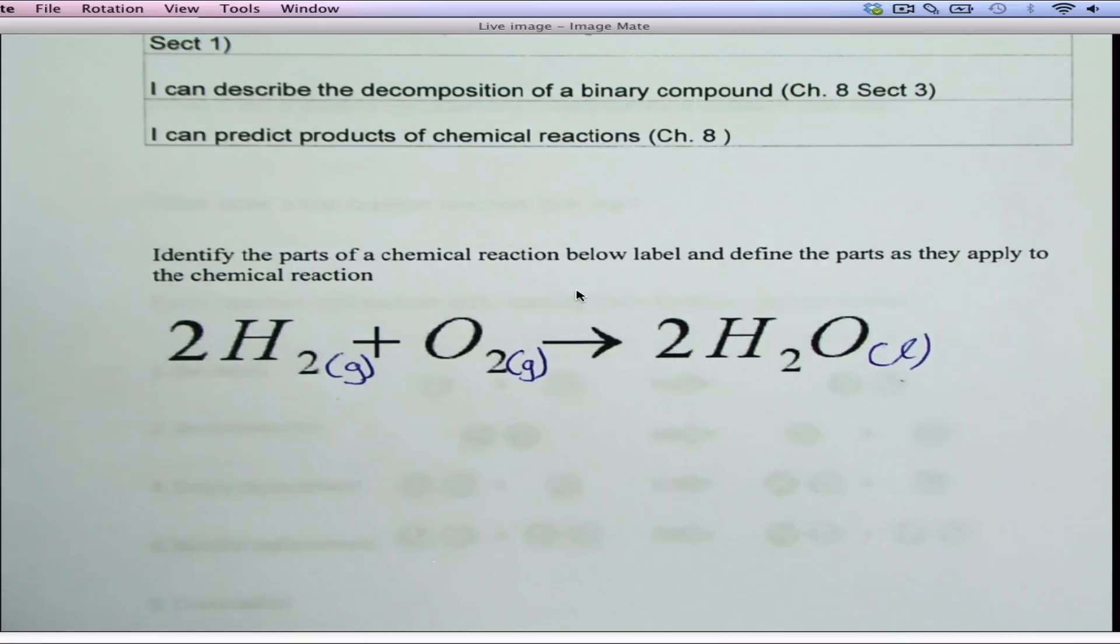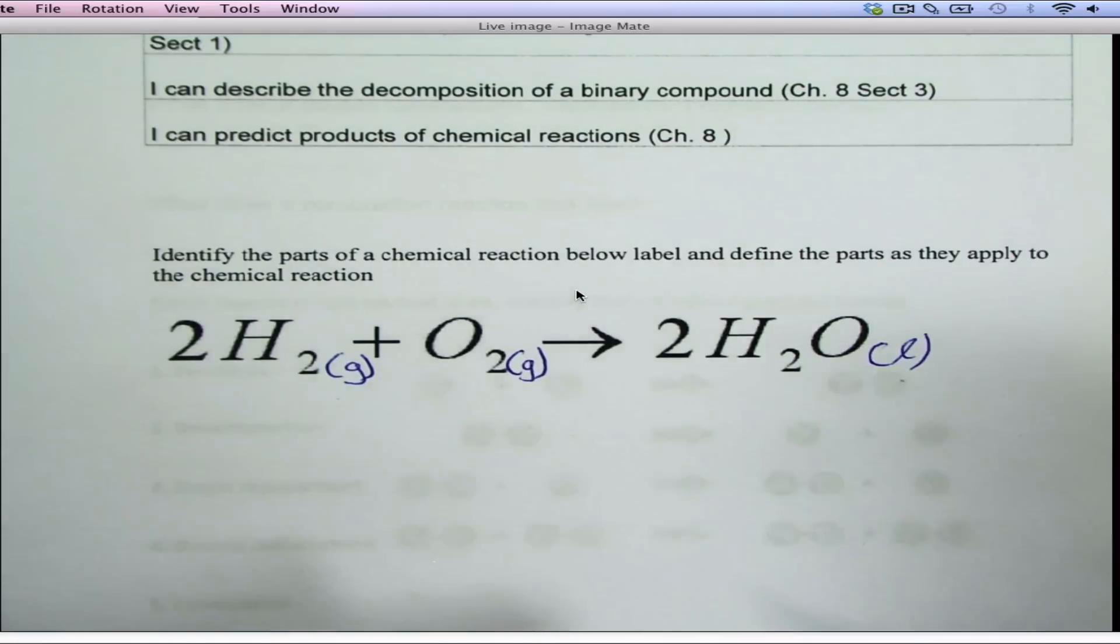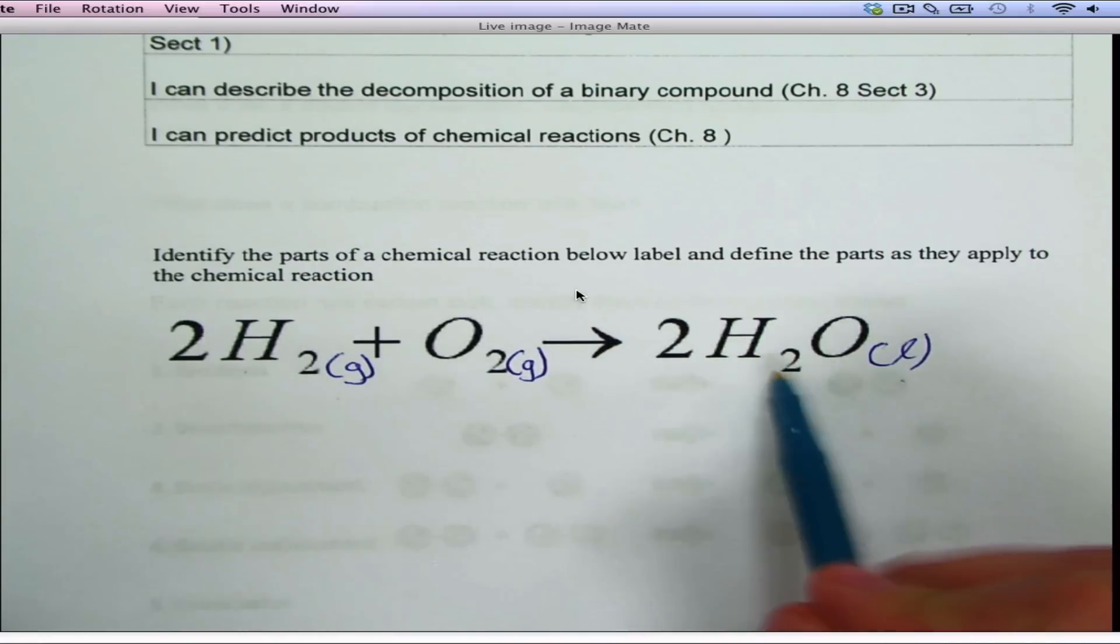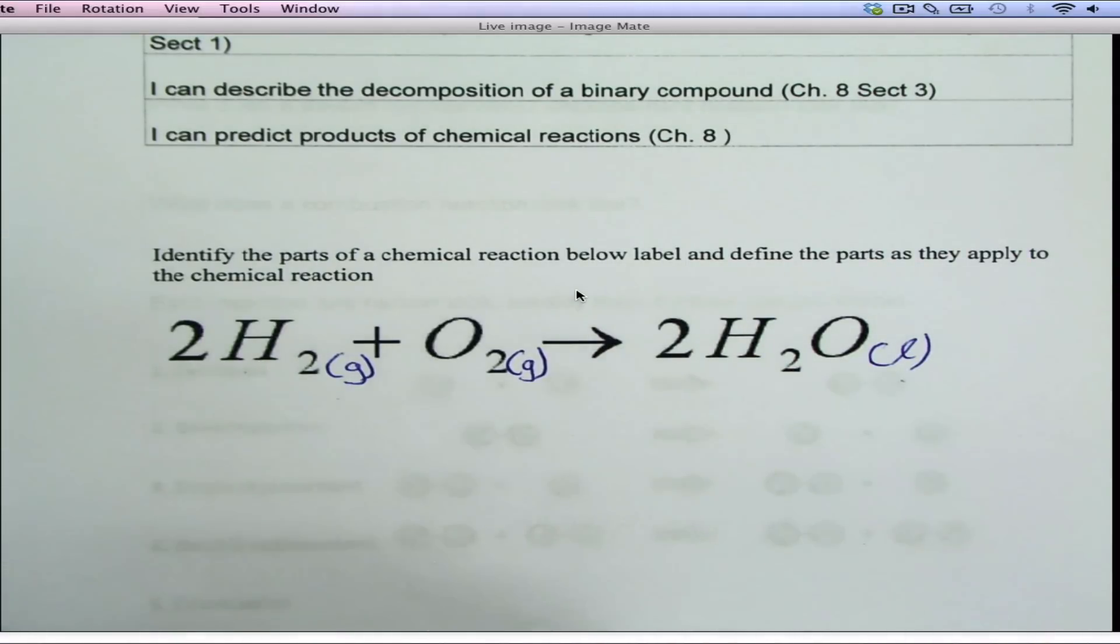Here are the parts of a chemical reaction. First thing you should realize, these H2O, these are elements and compounds, right? These are the things that make a chemical reaction go.